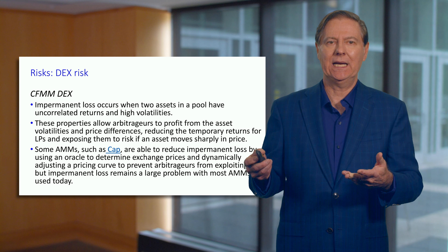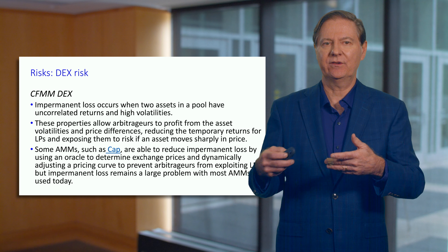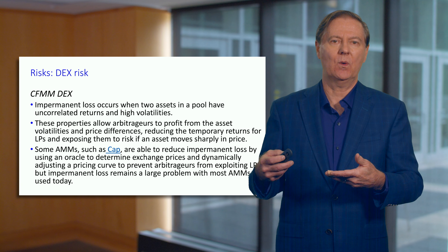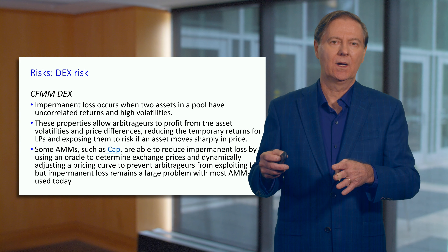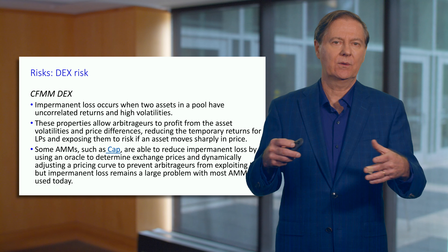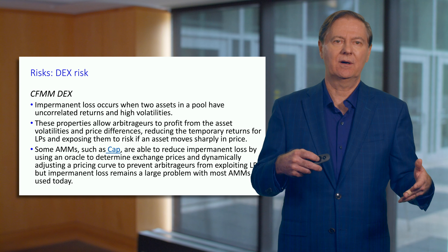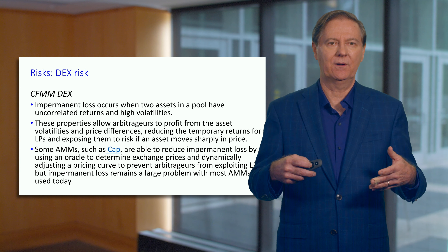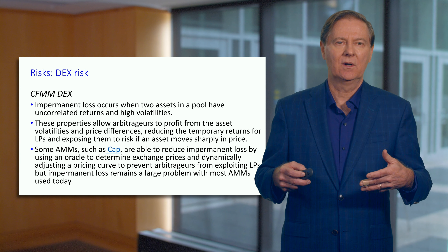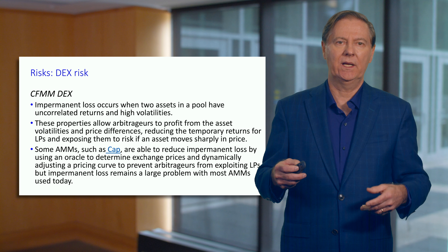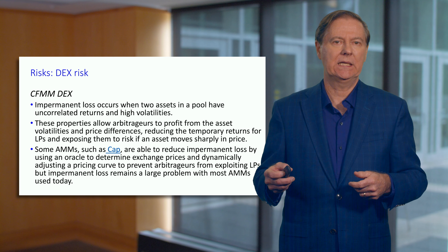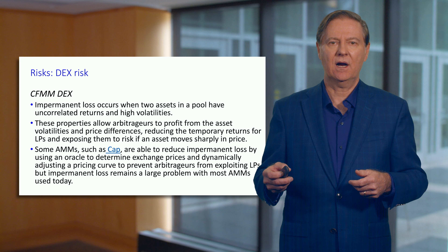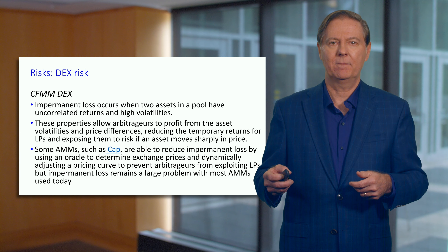Whereas something like DAI and USDC — both stablecoins — gives you very low volatility and very low impermanent loss. These are the risks people face when they deploy liquidity to a constant function automated market maker.